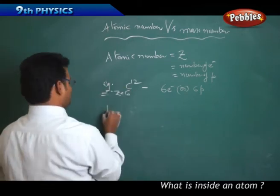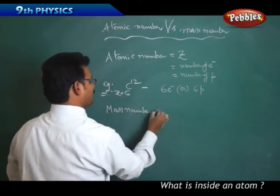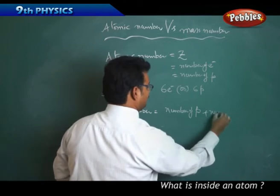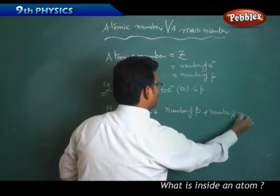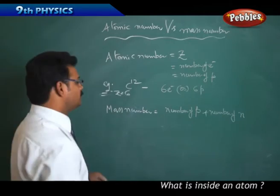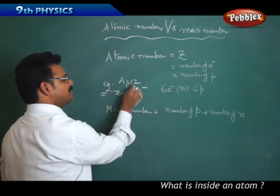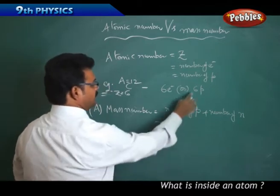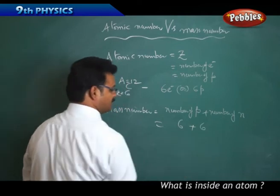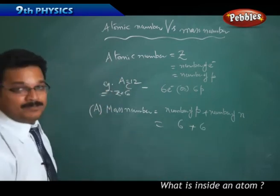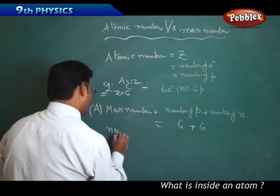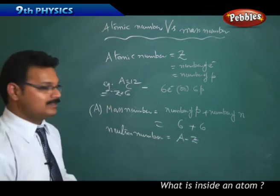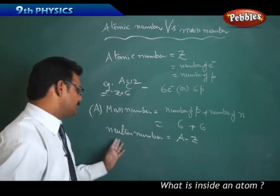Mass number equals the number of protons plus the number of neutrons, represented by the symbol capital A. For C-6-12, the mass number is 12. Since the number of protons is 6, adding them gives 12. To find the neutron number, use the formula: neutrons = A minus Z. For carbon: 12 minus 6 equals 6 neutrons.